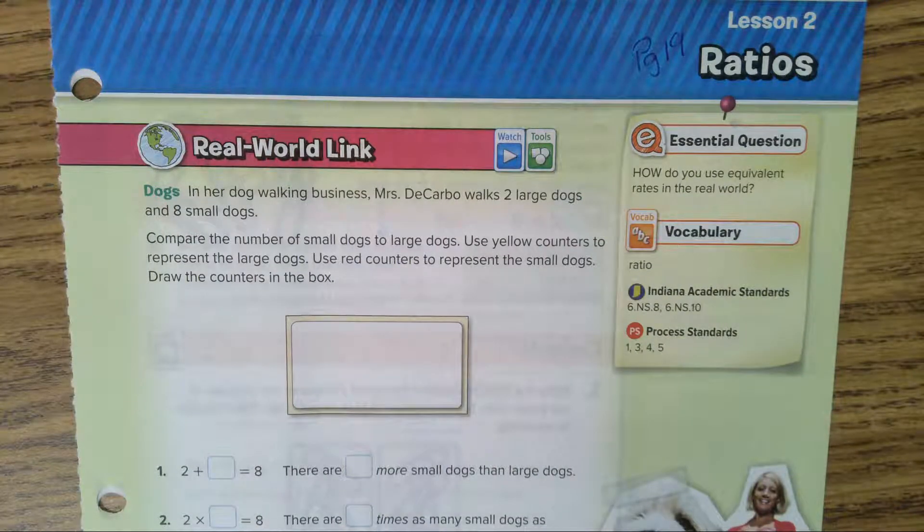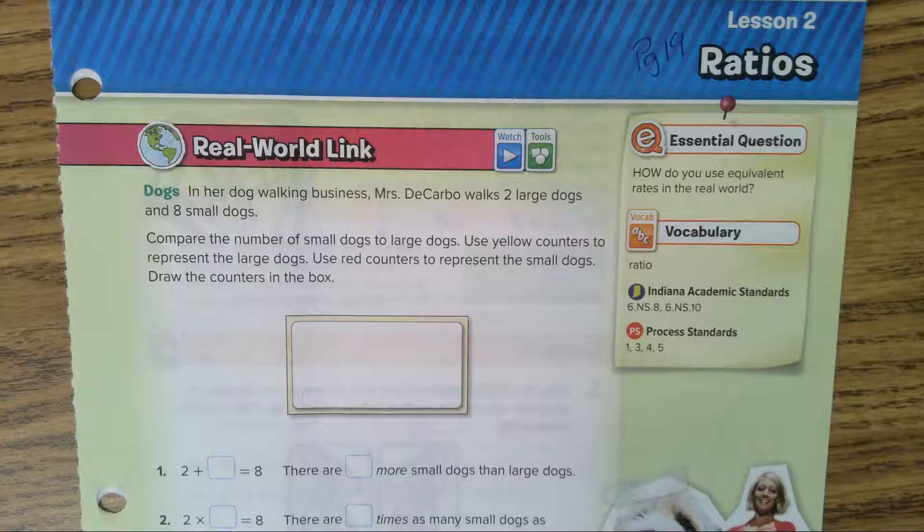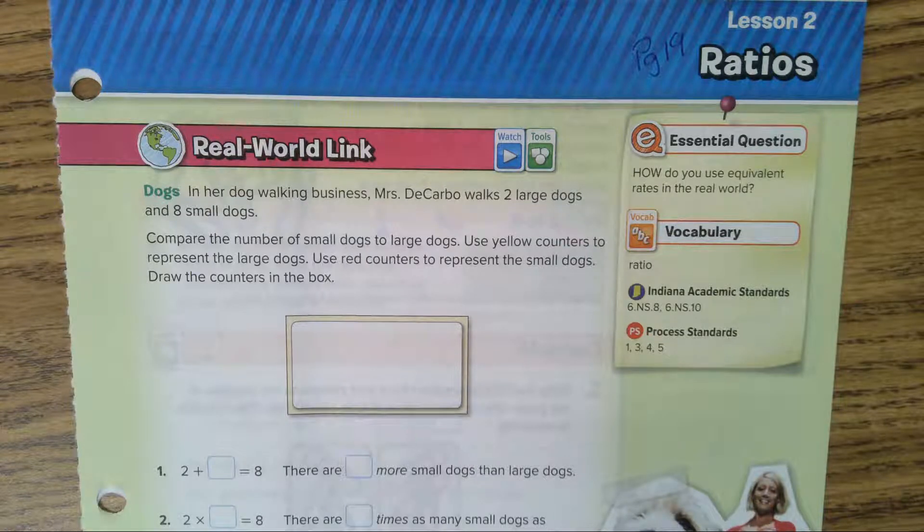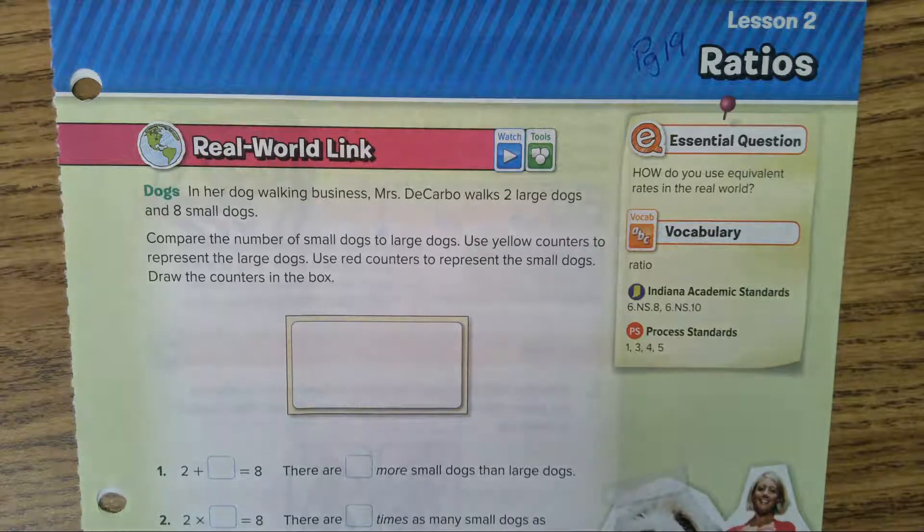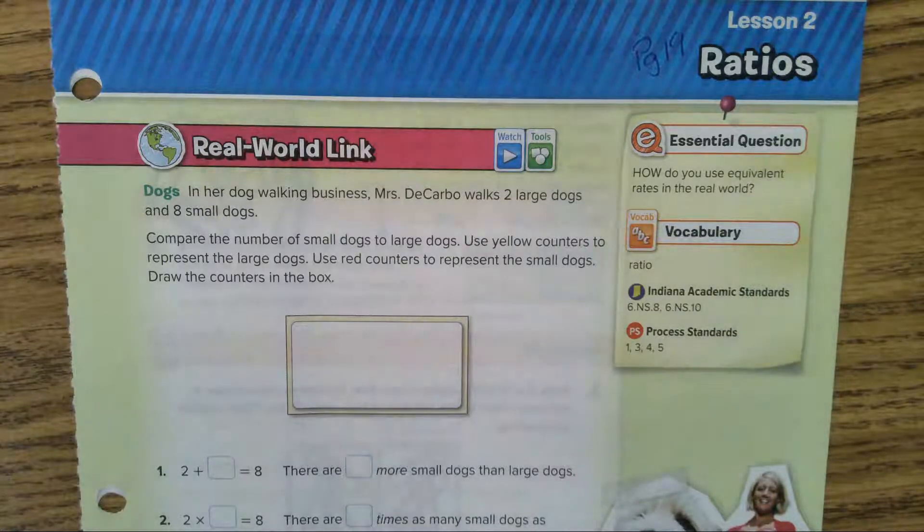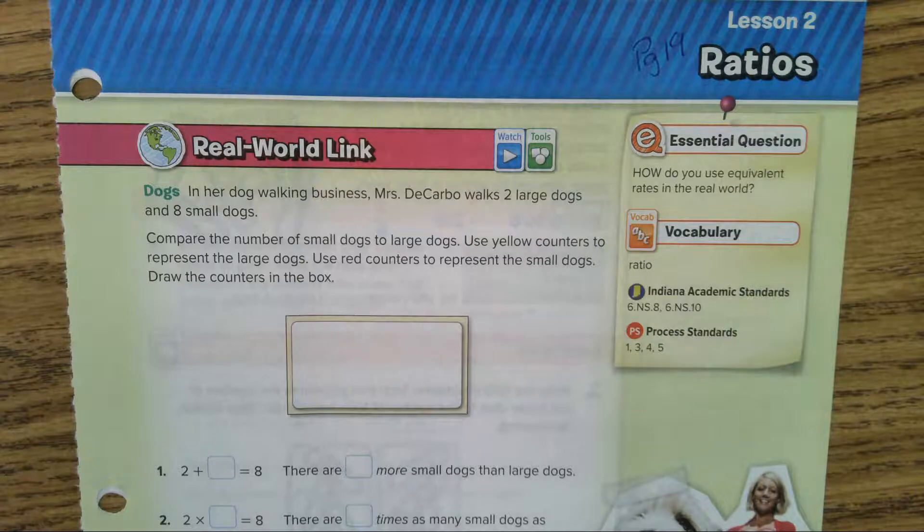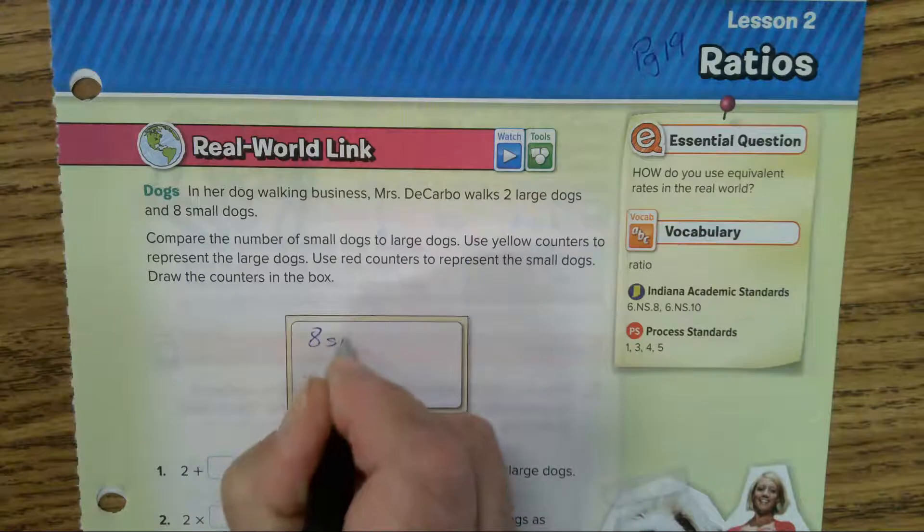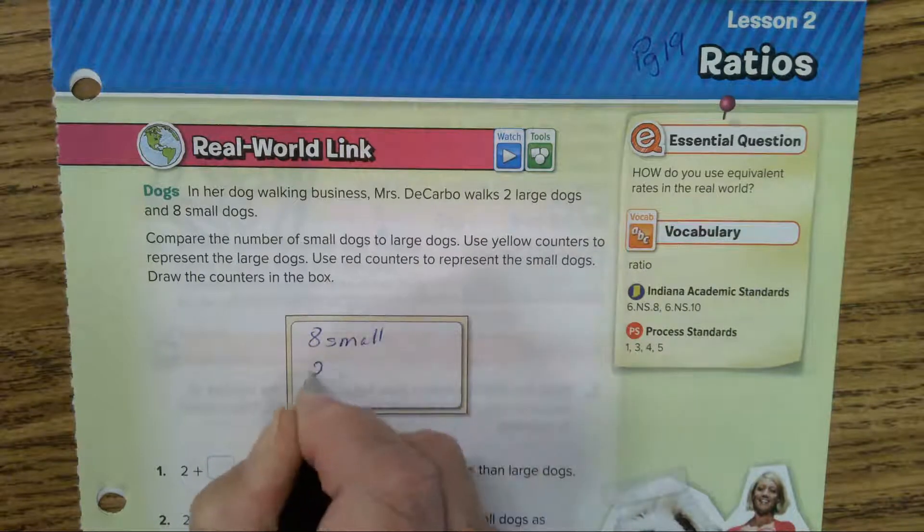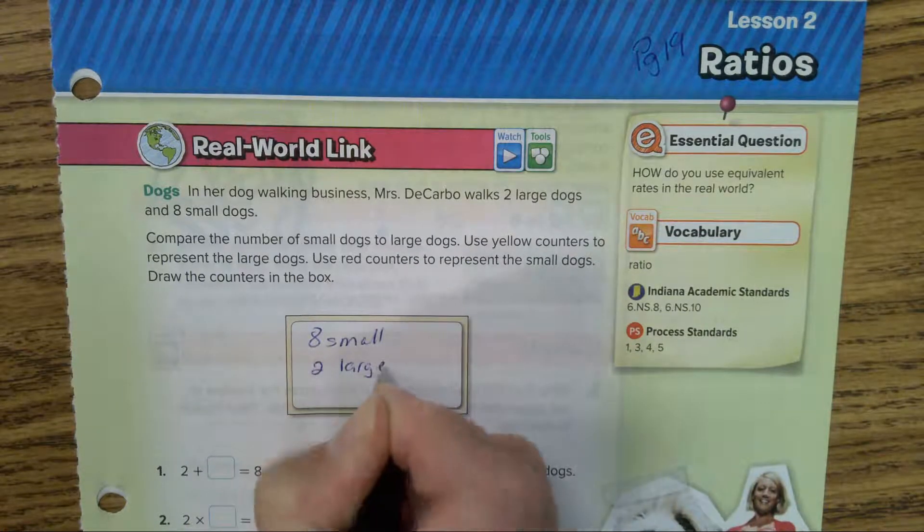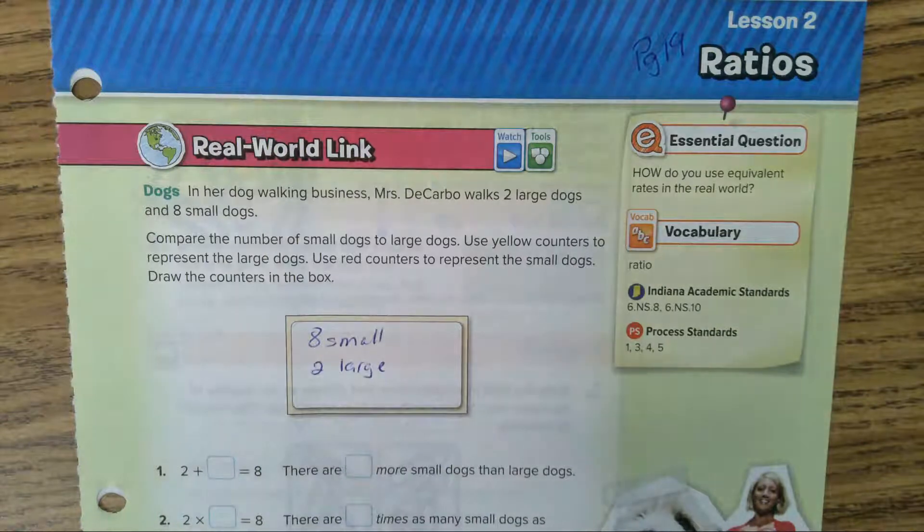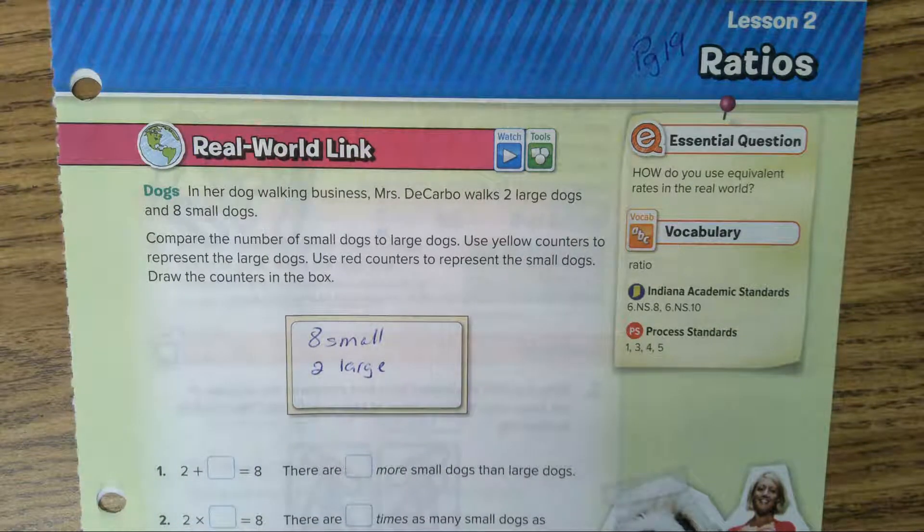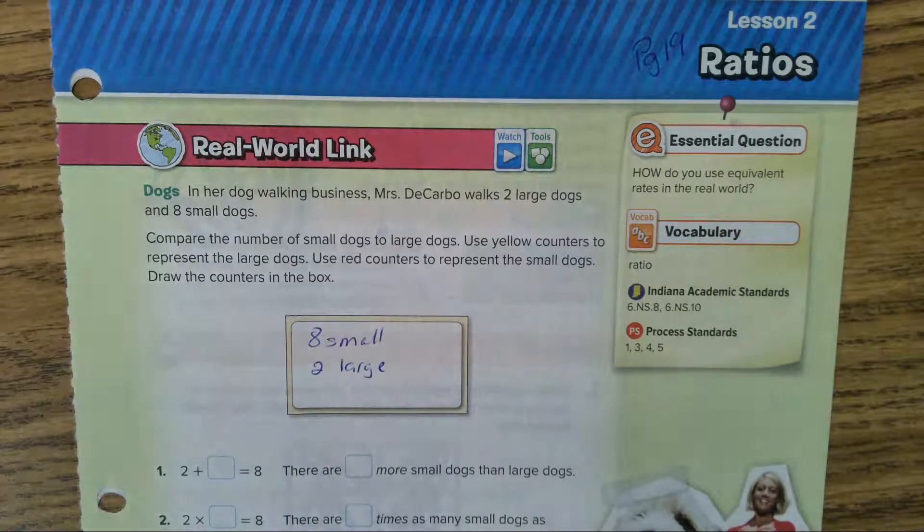In her dog walking business, Mrs. DeCarbo walks two large dogs and eight small dogs. Compare the number of small dogs to large dogs. We have eight small, we have two large dogs.